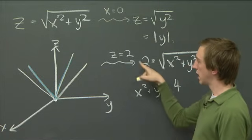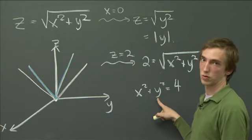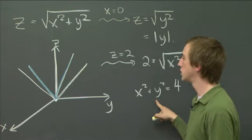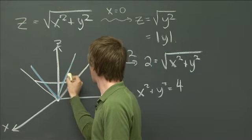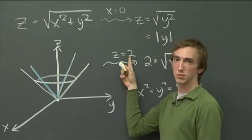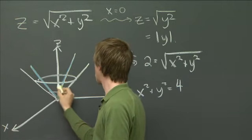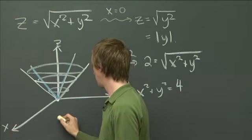So what that tells us is that at the height z equals 2, we're just going to have a circle of radius 2. This is just the equation for the circle of radius 2. And so at height 2, we just have a circle. And actually, as you can see, there's nothing special about 2. At every height, we're just going to have a circle. And so this is what's called a cone.